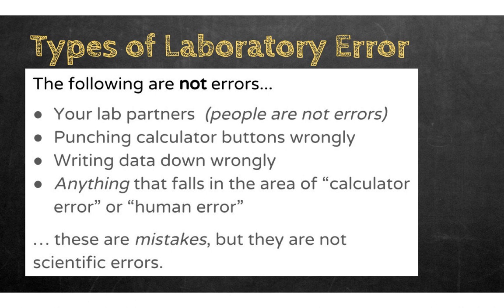The following are not errors: your lab partner, punching calculator buttons incorrectly, and writing down data wrong. Anything in the area of calculator error or human error is not systematic or random — they are mistakes, but not scientific errors. Systematic errors focus on procedural issues; random errors focus on things beyond your control.